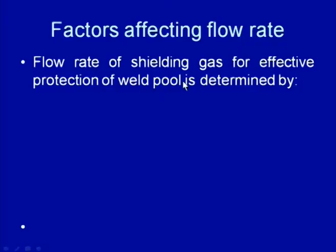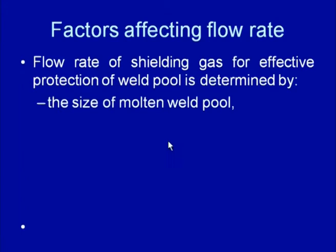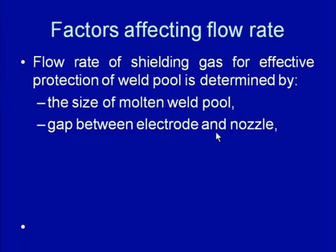The factors that dictate the flow rate for effective shielding include: the size of the weld pool — the bigger the pool, the greater the gas flow required to form a perfect blanket; and the gap between the nozzle and the electrode — if this gap is large, a higher flow rate is needed to maintain a perfect jet around the arc and weld pool.